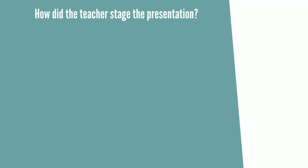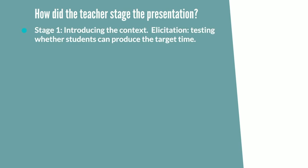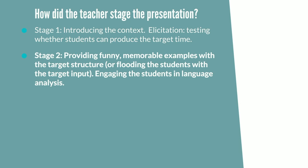How did the teacher stage the presentation? Stage 1: Introducing the context. Elicitation — testing whether the students can produce the target item. Stage 2: Providing funny, memorable examples with the target structure, or flooding the students with the target input.